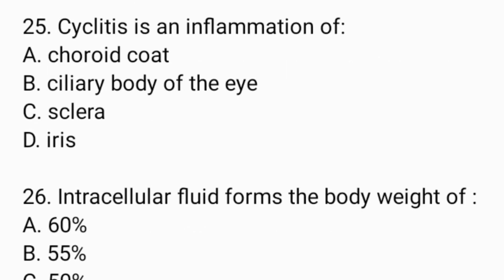Next question: Cyclitis is an inflammation of — Option A: choroid coat. Option B: ciliary body of the eye. Option C: sclera. Option D: iris. And the answer is Option B, ciliary body of the eye.